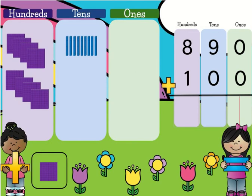Here we see we have the number 890 plus 100. So here we have 800, and 10, 20, 30, 40, 50, 60, 70, 80, 90. And there's no 1s, right? There's 800s, 9 tens, and 0 ones. And all we're doing is adding 100.